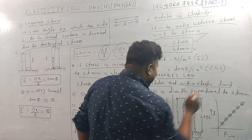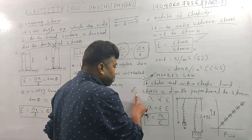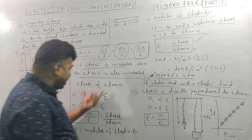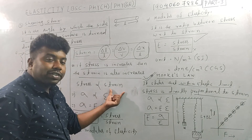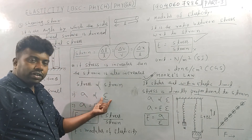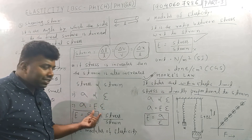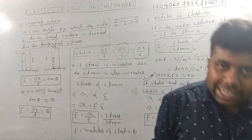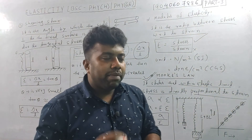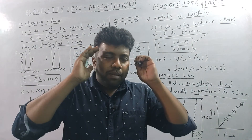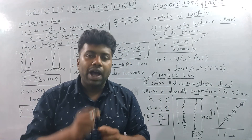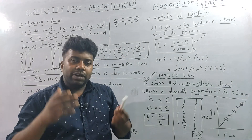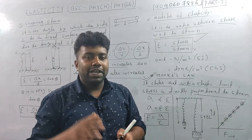It states that within the elastic limit, if stress is directly proportional to the strain, then stress equals a constant times strain. That proportionality constant is the modulus of elasticity. This is Part 3 of the video. If you want to join the group, please join and leave your details. You can easily grab all the topics and score. Thank you for watching.